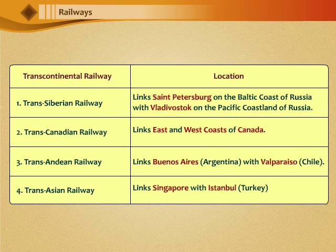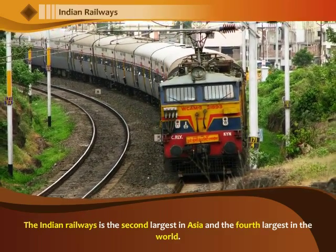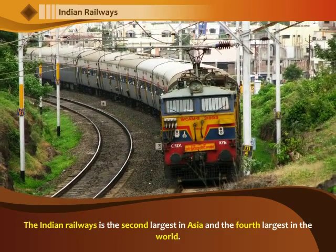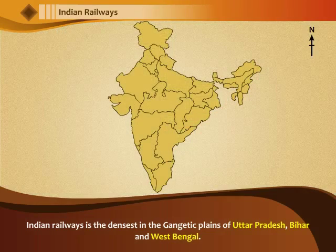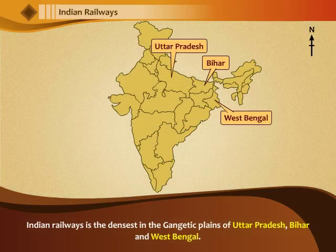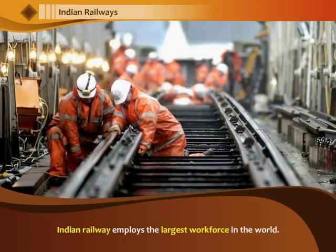The major transcontinental railways across the world include: 1. Trans-Siberian Railway, 2. Trans-Canadian Railway, 3. Trans-Andean Railway, and 4. Trans-Asian Railway. Indian Railways is the second largest railway network in Asia and the fourth largest in the world. Indian Railways is the densest in the Gangetic Plains of Uttar Pradesh, Bihar and West Bengal, and employs the largest workforce in the world.